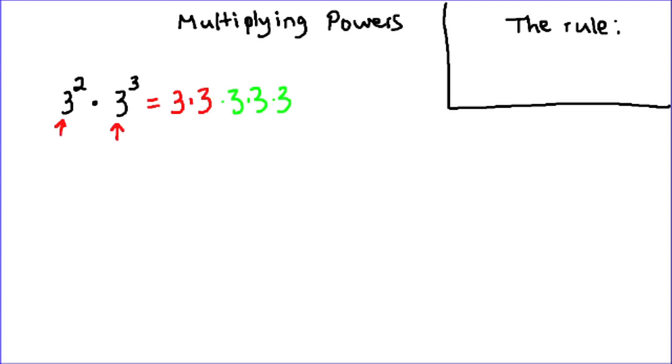So instead of thinking about this as two separate powers, we can actually put this whole thing together. And when you do that, you can see that really what we have is 1, 2, 3, 4, 5 threes, or 3 to the power of 5.